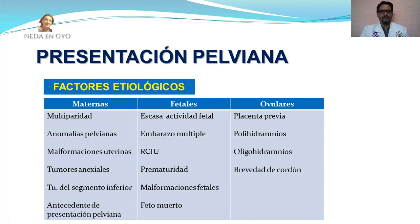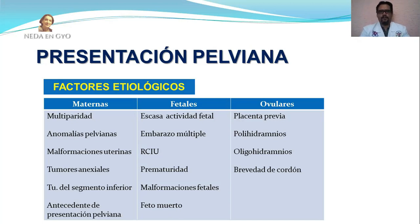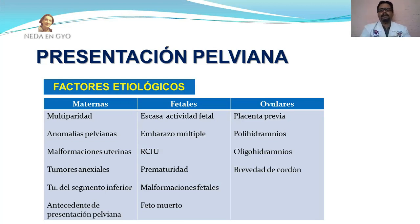Dentro de los factores maternos, en primer lugar tenemos la multiparidad, donde existen cambios en la fibra muscular: menor cantidad de fibras contractiles, el útero se hace más fibroso, con menos tonicidad, y el útero tiende a irse hacia adelante. Todo esto trae como consecuencia que el feto pueda tener mayor movilidad y quedar en presentación pelviana. También las anomalías pelvianas, como tumores, alteraciones en la forma por traumatismos o enfermedades como poliomielitis o luxación congénita de cadera, hacen que la pelvis tenga características inadecuadas, predisponiendo a la presentación pelviana.